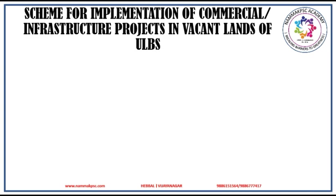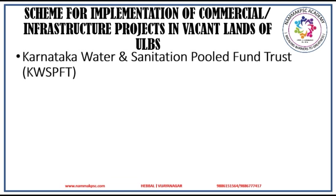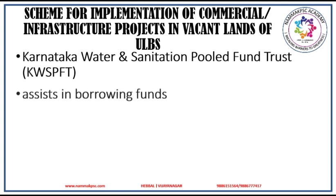In Karnataka, there is a scheme for implementation of commercial infrastructure projects in vacant lands of urban local bodies. The Government of Karnataka is acting through the Karnataka Water and Sanitation Pooled Fund Trust, which is aided by Karnataka Urban Infrastructure Development Finance Corporation. The aim of the scheme is to improve the real estate capacity of urban local bodies, and this trust will also assist urban local bodies in borrowing funds.